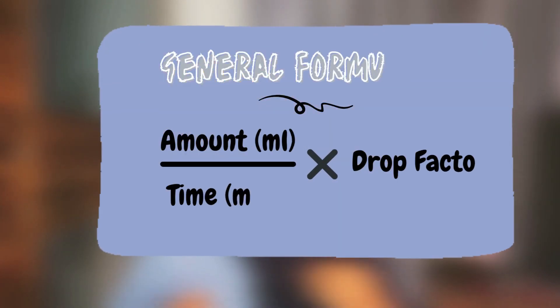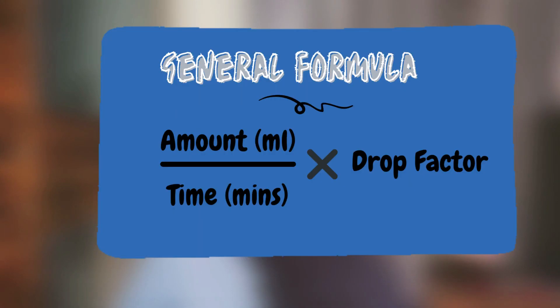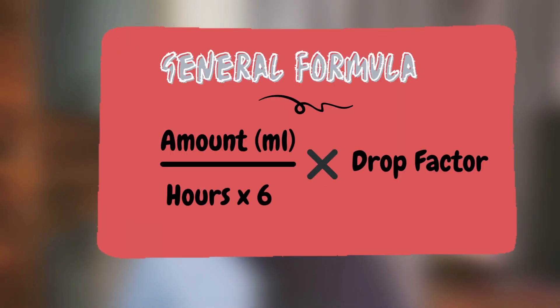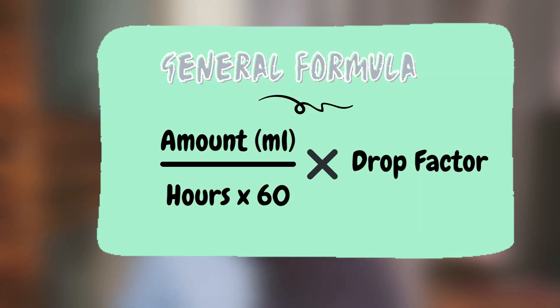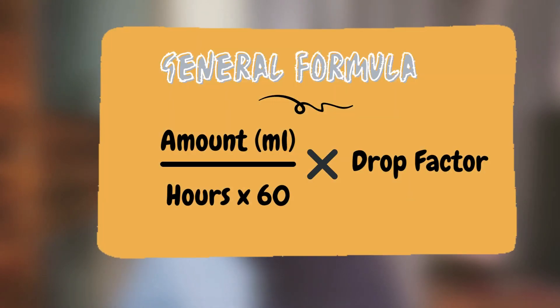The general formula for any drops per minute is the amount of fluid you're going to give in mls, over the time in minutes, times the drop factor. Since most IV infusions are given over hours, we can convert this formula into: amount in mls over hours times 60 — converting it into minutes — multiplied by the drop factor.